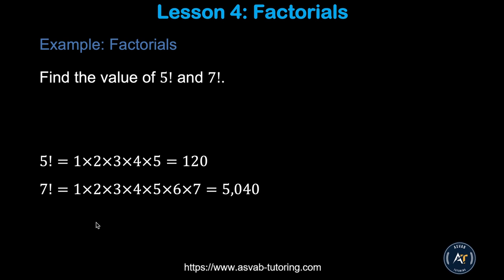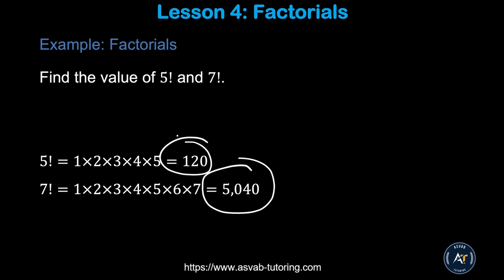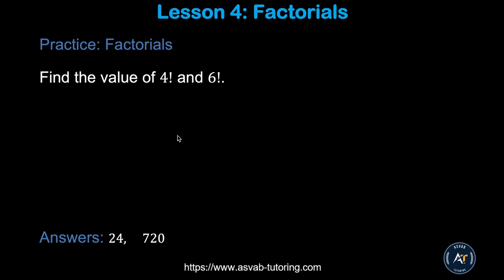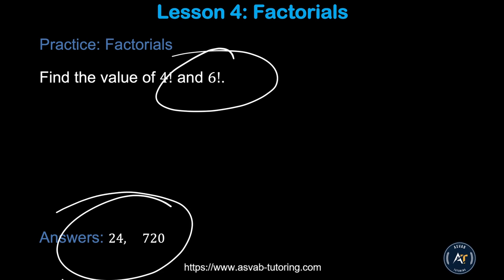Now we'll learn how to find a factorial. Factorial 5 means 5 times 4 times 3 times 2 times 1. You start with 1 up to that number, or work downward — either way. Factorial 7 equals 1 times 2 times 3 times 4 times 5 times 6 times 7, which is 5040, and factorial 5 is 120. Try the two practice problems by yourself and make sure you get the correct answers.